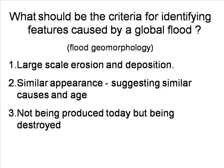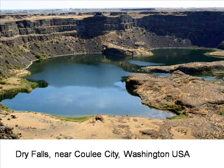If we are hoping to identify features caused by a global flood and the consequent sheet flow and channel flow of water, what criteria should we use? They should be on a large scale all over the world and originate in water-laid rock. They should be similar in appearance, suggesting a common cause and age, and importantly, they should not be being made today. They should be largely intact if they were only thousands of years old, and not millions.